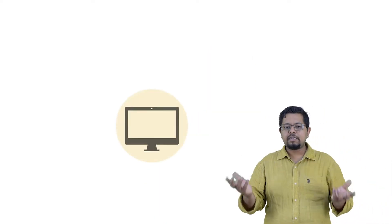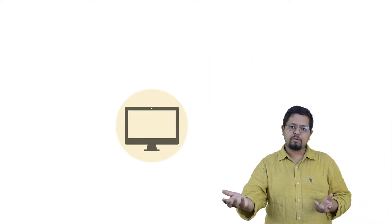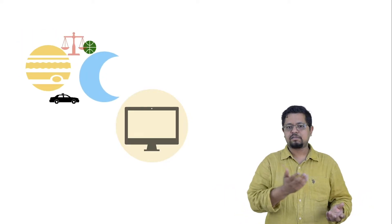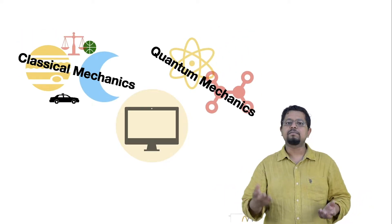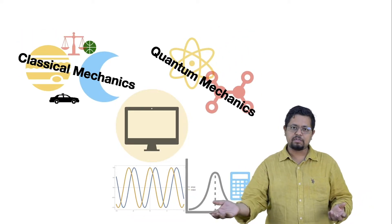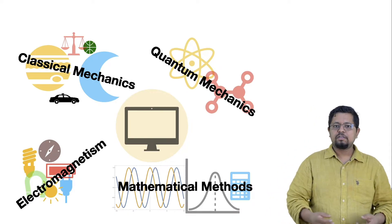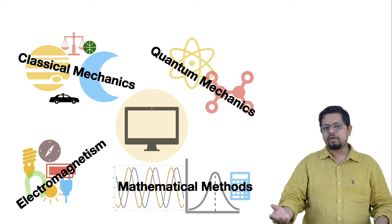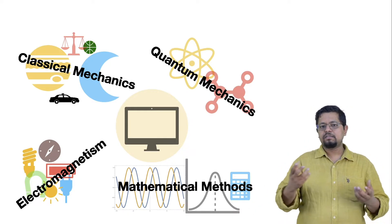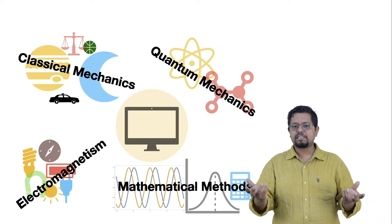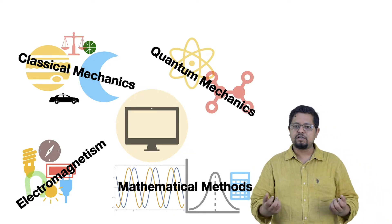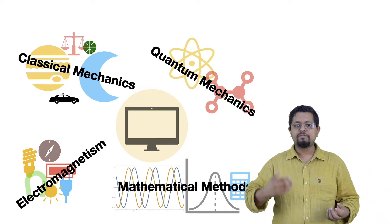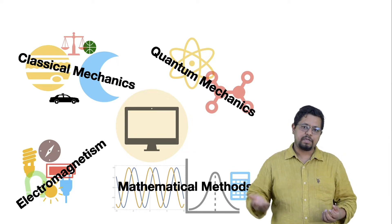We are going to use physics as a playground for computational thinking, which means we will take already known examples from various areas of physics such as classical mechanics, quantum mechanics, mathematical methods, and electrodynamics — courses already familiar from your undergraduate studies. We will take simple examples, learn computational thinking from them, and slowly build up to more complicated cases.